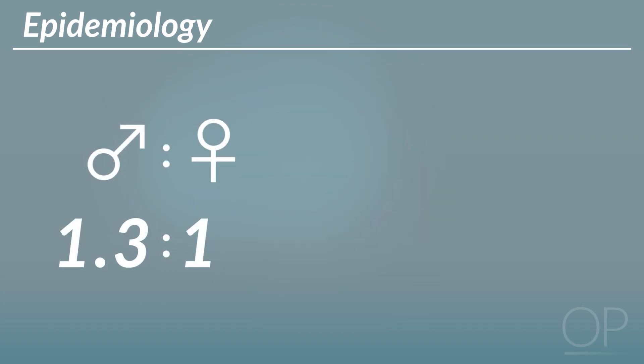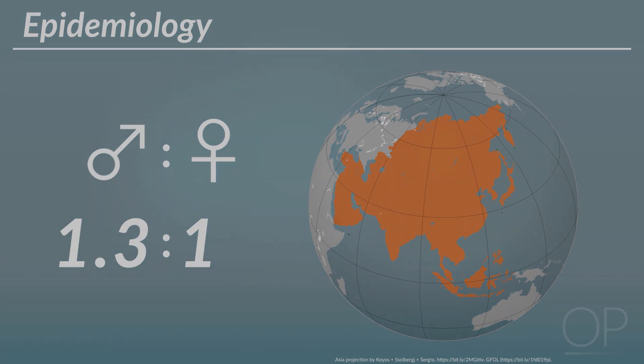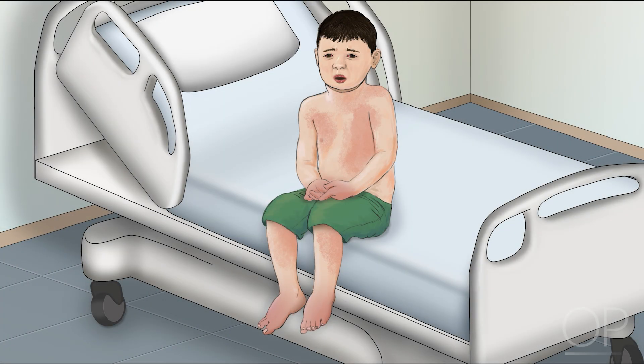Boys outnumber girls 1.3 to 1 and children of Asian ancestry are at highest risk. The cause of Kawasaki disease is unknown, although most experts believe that Kawasaki disease reflects an immune response to an unknown infectious trigger.